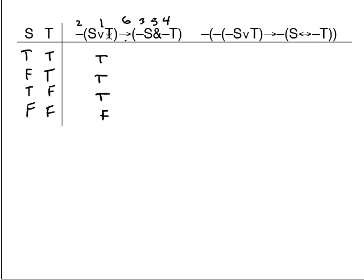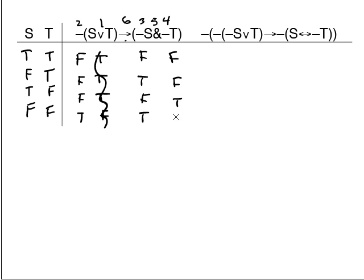Now I look at the dash — it negates what's inside the parentheses — so I get false, false, false, true. Next step is ¬s. I'll go straight to writing the negation of s, which is false, true, false, true. The same thing for ¬t — it's the negation of the t column — so I get false, false, true, true. Now I work on the ampersand. Ampersands are true only when both parts are true. False∧false is false. True∧false is false. False∧true is false. True∧true is true.